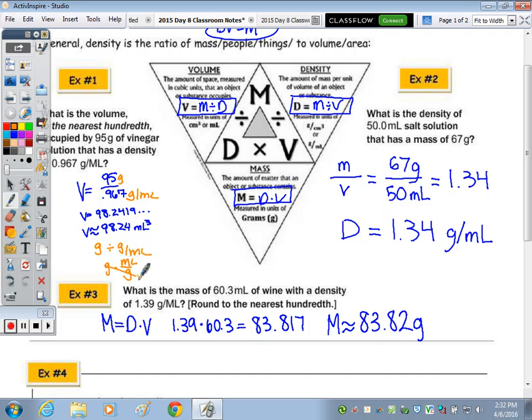Number two: what is the density of a 50 milliliter salt solution that has a mass of 67 grams? So density is 67 grams divided by 50 milliliters, that is correct, 1.34 grams per milliliter.